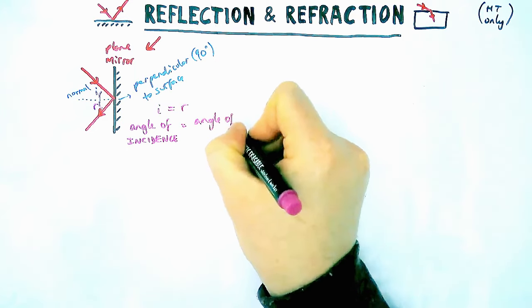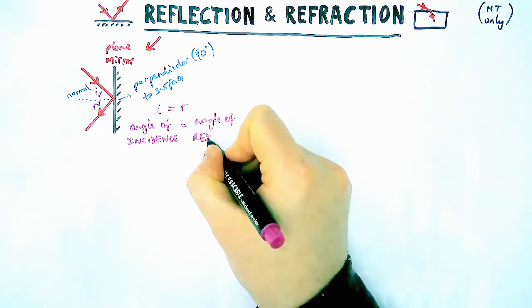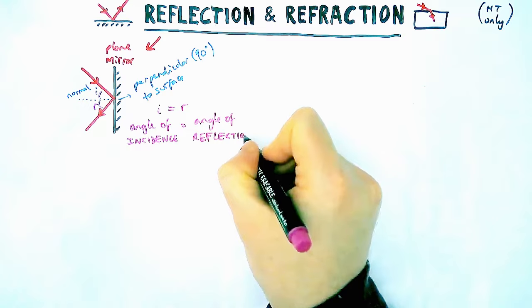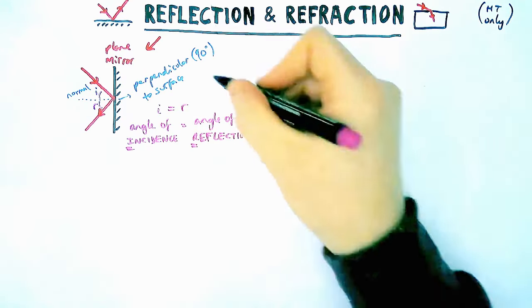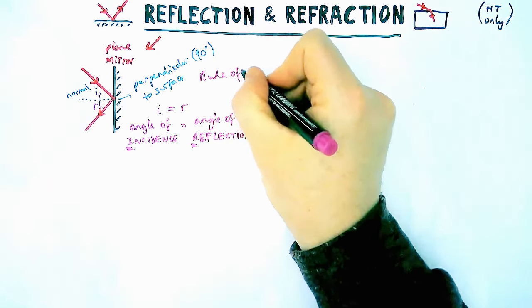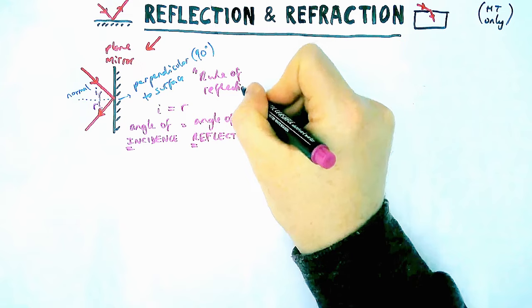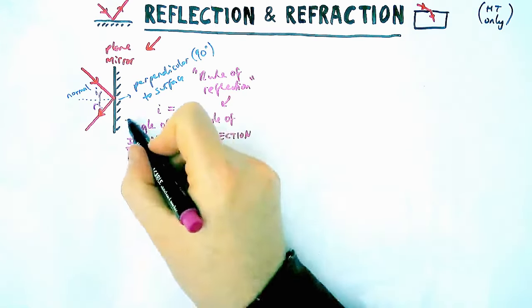We call both those things angle of incidence and the angle of reflection, which is indicated by the I and R in the diagram. Generally speaking, this is called the rule of reflection or the law of reflection, which is those two angles are equal to each other.